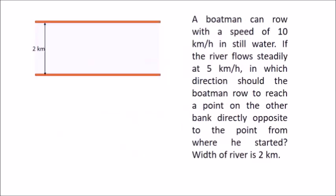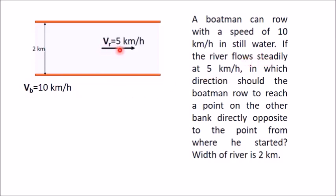Another example requires determining the difference of two velocities. A boatman can row at 10 km per hour in still water. The river flows steadily at 5 km per hour. In which direction should the boatman row to reach a point on the other bank directly opposite his starting point? We need a resultant velocity V such that starting from A he reaches B directly opposite.